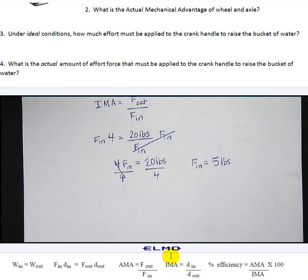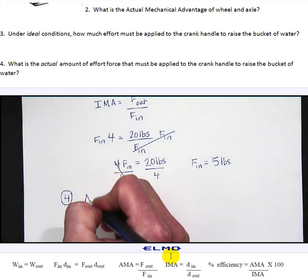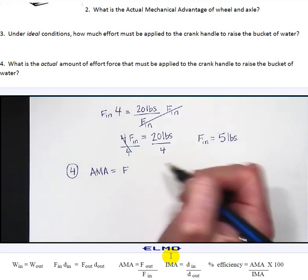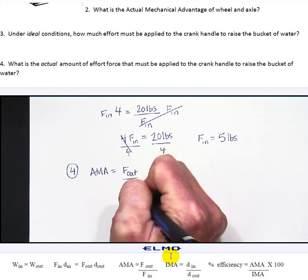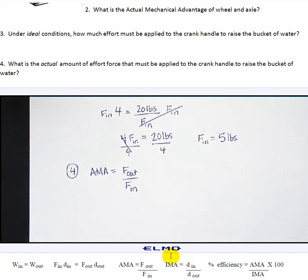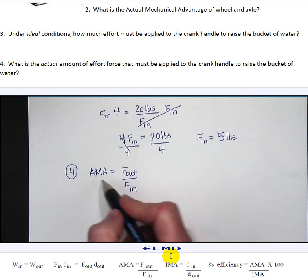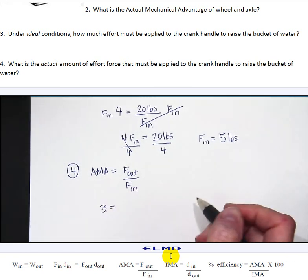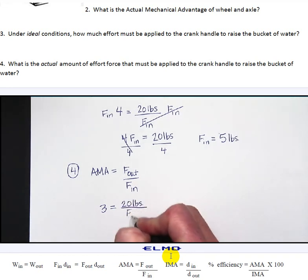So now we're going to go back to actual mechanical advantage equals the force out divided by the force in. And if you'll go back to question number 2's answer we found the actual mechanical advantage to be 3. And now the force out is still a 20 pound bucket of water and we still need to find the force in, what we're actually going to have to put in effort to raise this bucket.